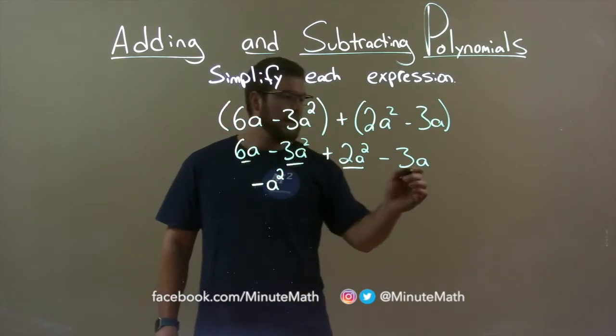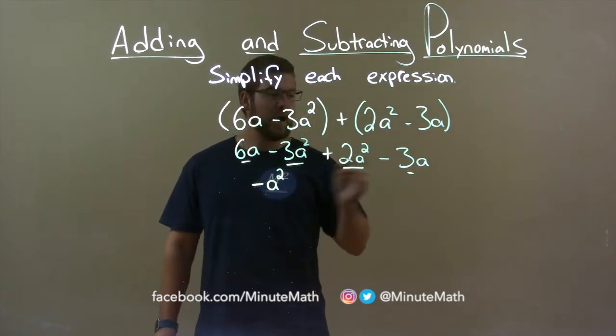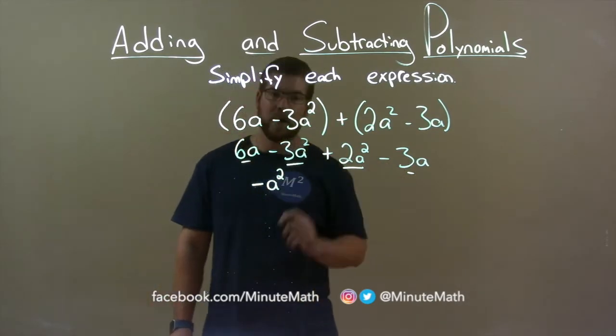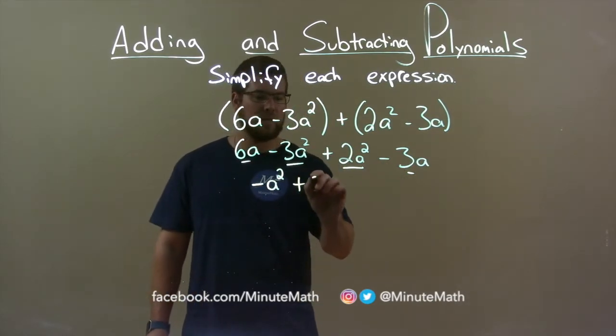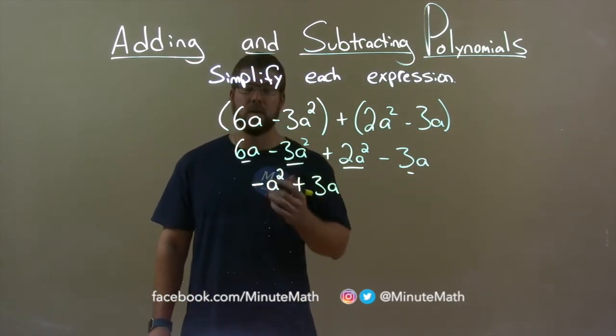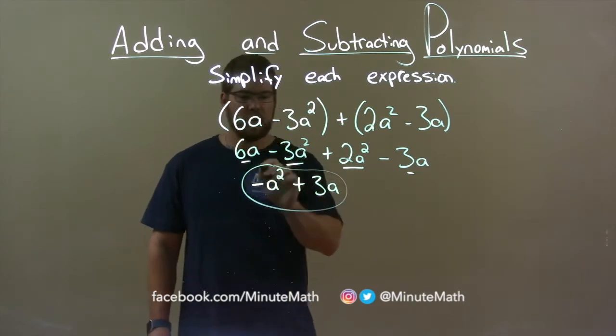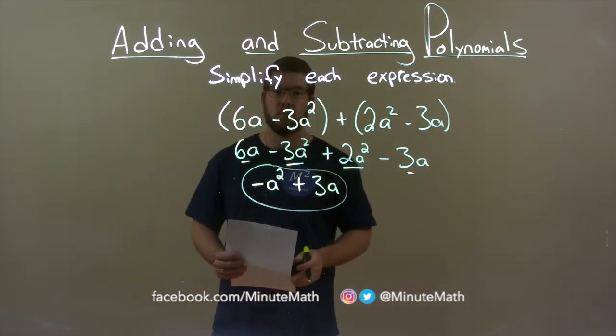Now we have a 6a and a 3a but we're minus 3a. So 6a minus 3a is plus a positive 3a. And there we have it. Our final answer: negative a squared plus 3a.